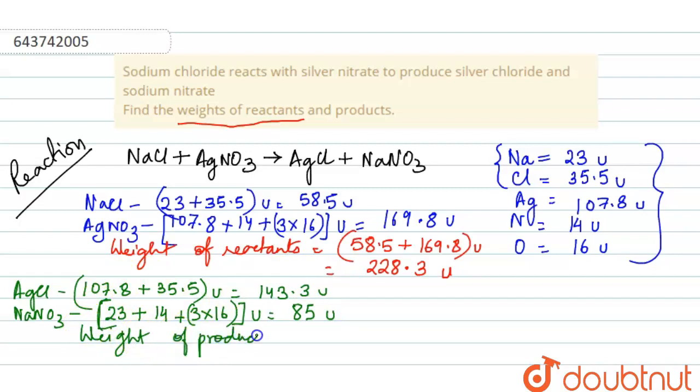Just add these two, that is AgCl and NaNO3 which is present in the products. You will get 143.3 plus 85 atomic mass unit, which is equal to 228.3 atomic mass unit again.